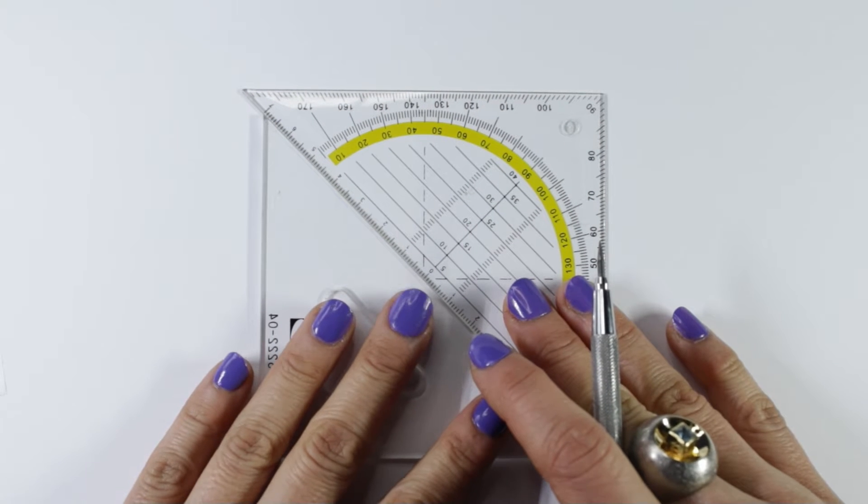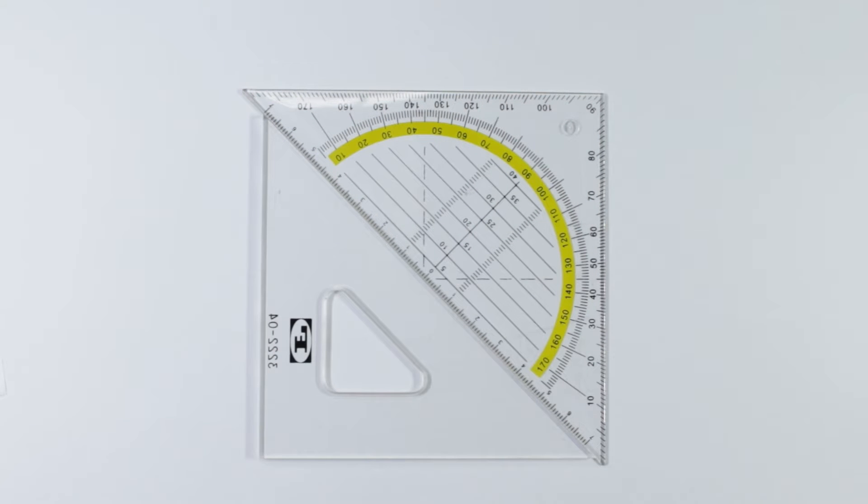Welcome to the second lesson. I am going to show you how to create 45 degree angles using both triangles.